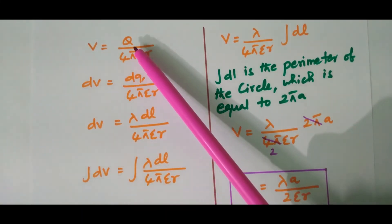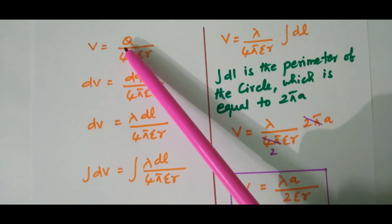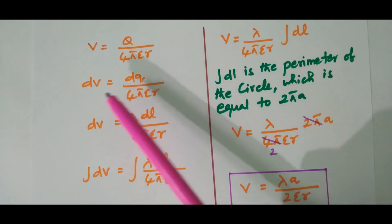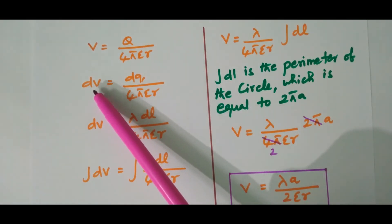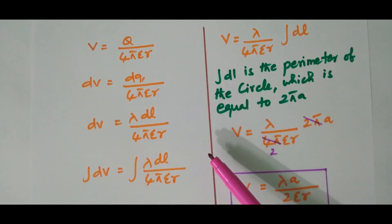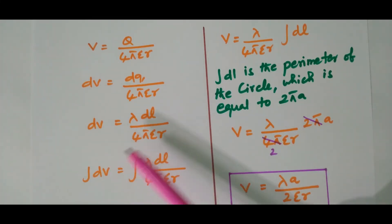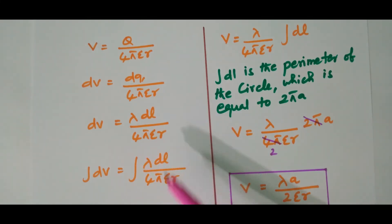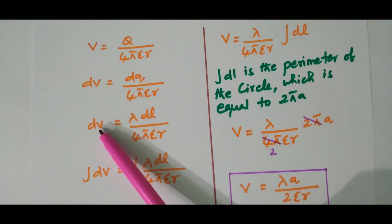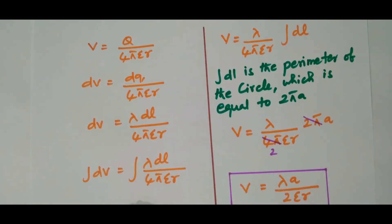The general formula for potential is V equal to q divided by 4 pi epsilon r. Due to small charge dq, V becomes dV, so dV equals dq divided by 4 pi epsilon r. Since dq can be replaced by lambda times dl, dV equals lambda dl divided by 4 pi epsilon r. Integrating both sides gives the total potential.